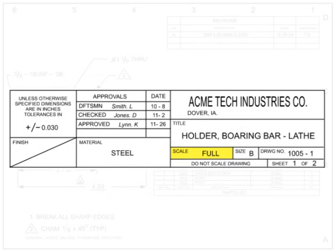The signature block contains all signatures required for the drawing to be officially released and published by the creator. Signatures and approvals should all be signed. If they are not, the drawing may not be an official release that is ready for manufacture.